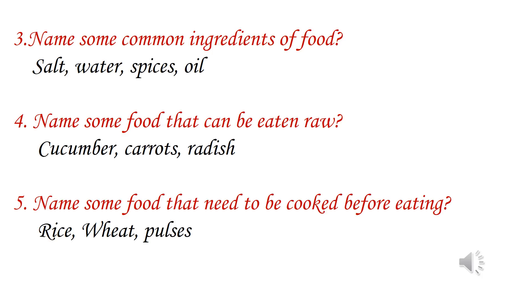Name some food that can be eaten raw: cucumber, carrots, radish. Name some food that need to be cooked before eating: rice, wheat, pulses.